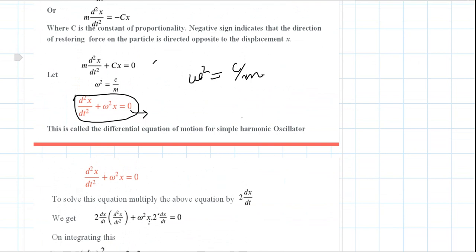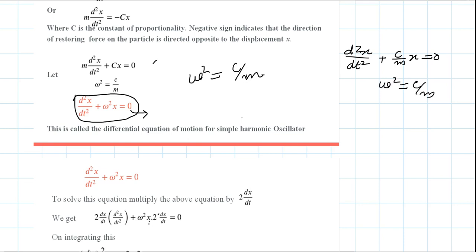We can write this as m·(d²x/dt²) plus cx equals 0. Dividing through by m: d²x/dt² plus (c/m)x equals 0. We set c/m equal to ω², so the equation becomes d²x/dt² plus ω²x equals 0. This is the differential equation of motion for a simple harmonic oscillator.